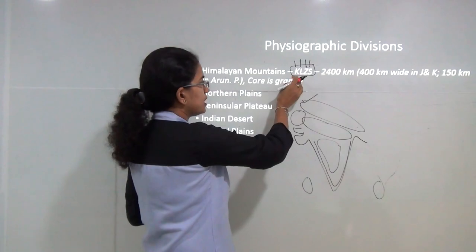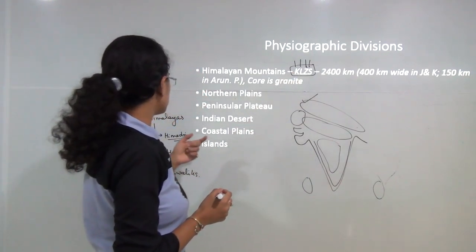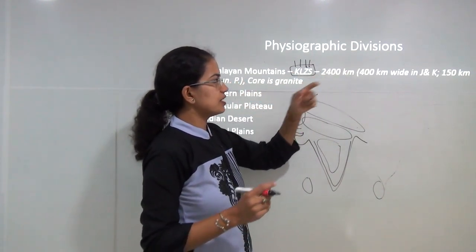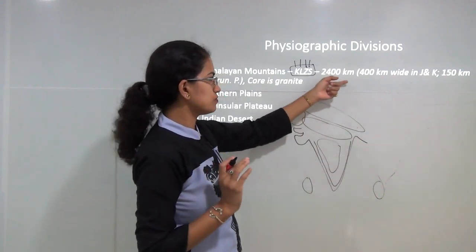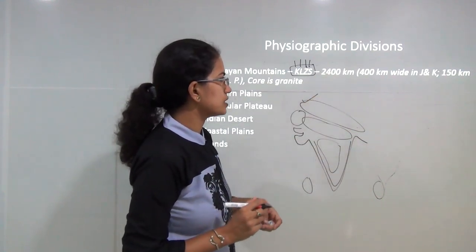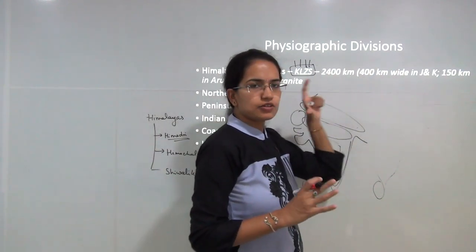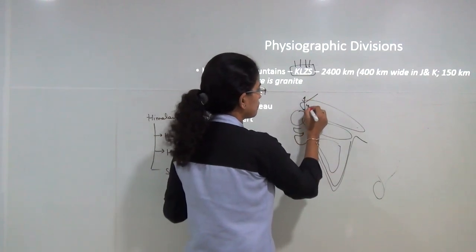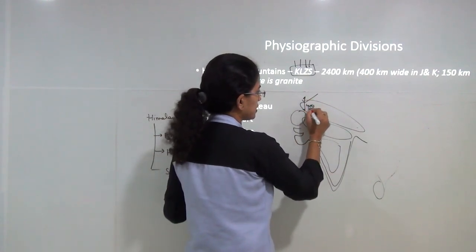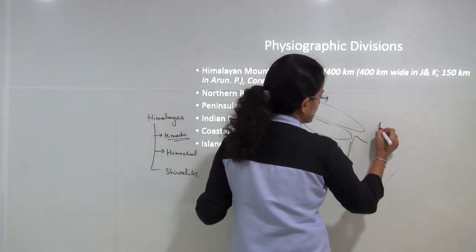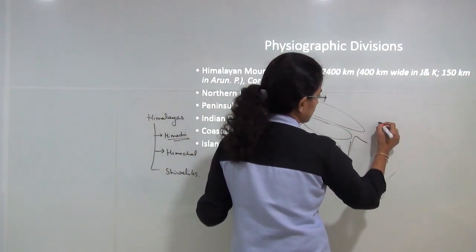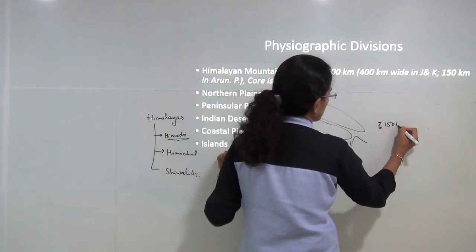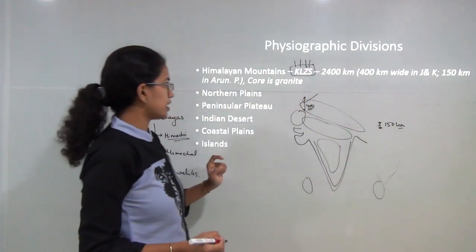Karakoram and Ladakh form the trans-Himalayan region. The Himalayas have a length of nearly 2,400 kilometers. They are wider towards the west — nearly 400 kilometers wide — however as they reach Arunachal Pradesh their width decreases to only 150 kilometers.